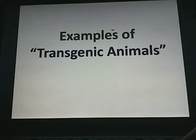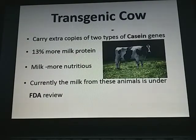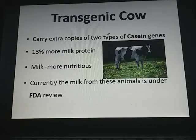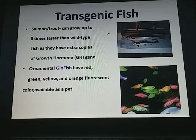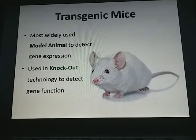Examples of transgenic animals include transgenic mouse, cow, pig, monkey, rabbit, and fish. Transgenic cows carry extra copies of casein genes, producing 13% more milk protein than normal; the milk is more nutritious and currently under FDA review. Transgenic salmon or trout can grow up to six times faster than wild-type fish due to extra copies of growth hormone gene. Ornamental goldfish with red, green, yellow, and orange fluorescent colors are available as pets. The transgenic mouse is the most widely used model animal for detecting gene expression and is used in knockout technology.